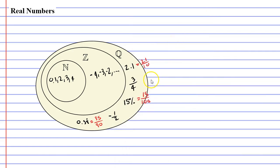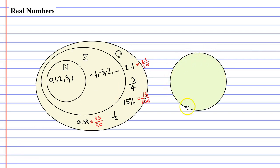So if all the rational numbers are numbers that can be represented as a fraction where the top and bottom number are whole numbers, what about numbers that cannot be represented as a fraction? We need another set of numbers — a set of numbers that are completely separate to our rational numbers. If we have our rational numbers over here on the left, then on the right we have our set of irrational numbers.